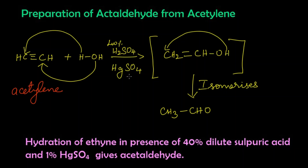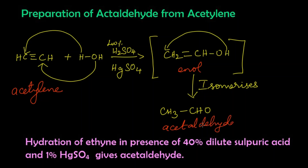We get an intermediate called enol — it is called enol because a double bond is present. On isomerization of the enol, we get acetaldehyde. The IUPAC name of acetaldehyde is ethanal.